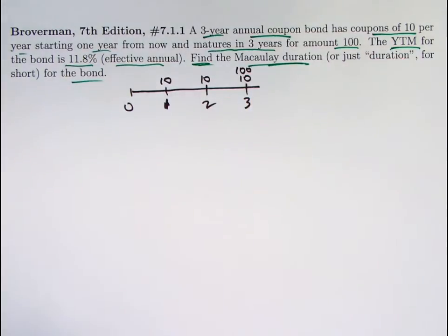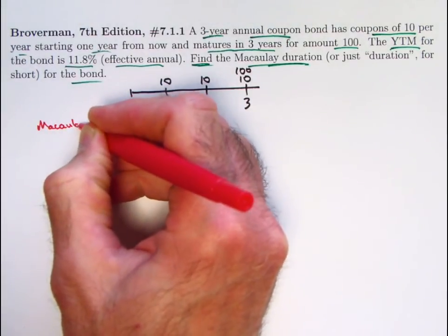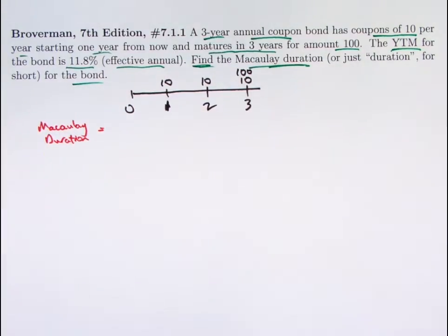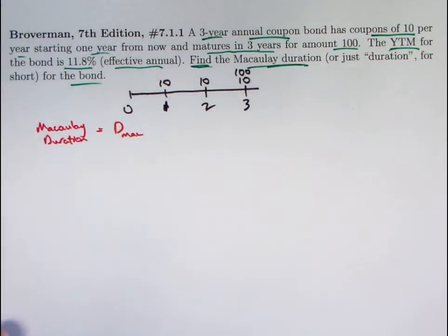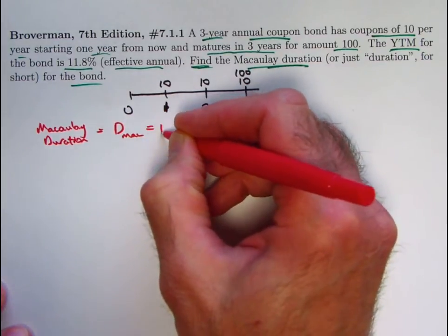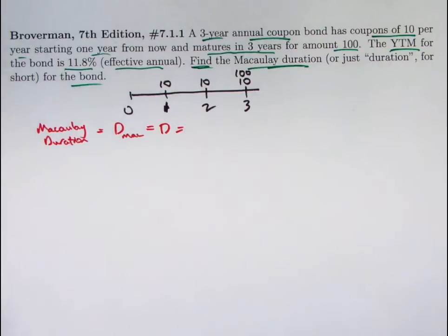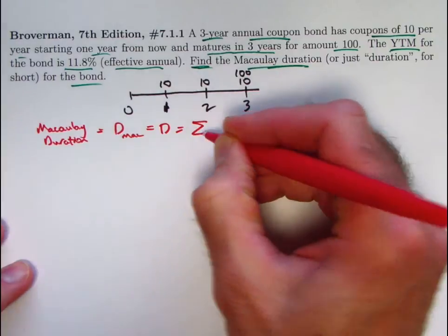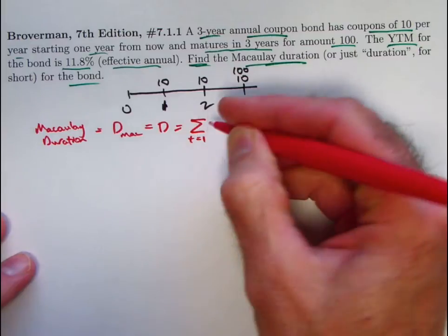And what is the Macaulay duration then? Macaulay duration, or again, just duration for short. When you say duration, you implicitly mean Macaulay duration, denoted by D sub Mac in the seventh edition of Broverman. Actually, in earlier editions, it was just denoted by D. Again, I'm going to write a different formula than the one I showed you there in the book. This different formula is also shown in the book, just not initially. It's a summation.